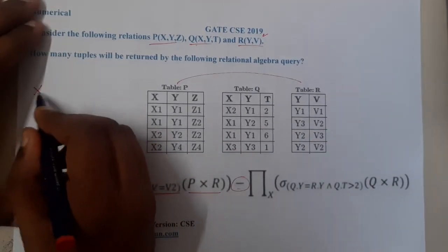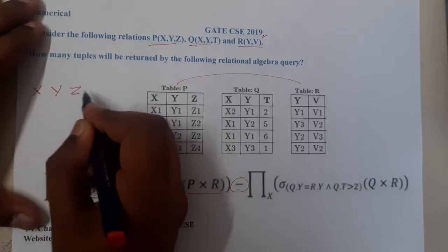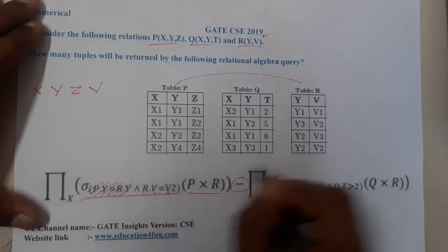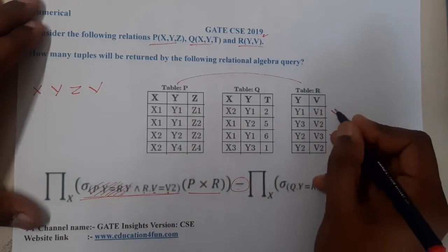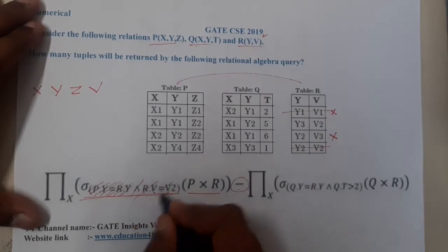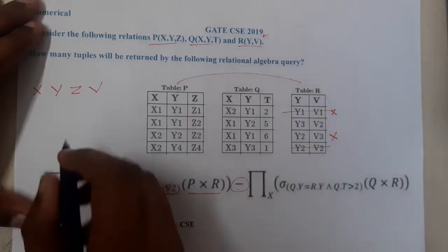We will have the columns X, Y, Z, and V. So to be clear, here they are saying that R.V value should be equal to V2. So indirectly these two rows are not allowed, right? So now the only row which is left out is these two rows. So now I think it will be really easy.